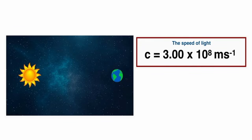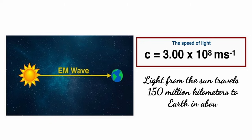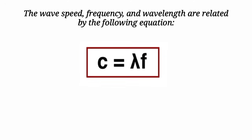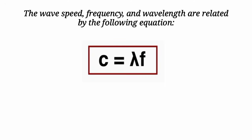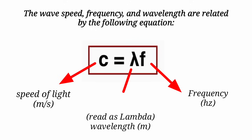To appreciate just how great this speed is, light from the sun travels 150 million kilometers to Earth in about 8 minutes. The wave speed, frequency, and wavelength are related by the following equation: C is equal to the product of wavelength and frequency, where C is the speed of light expressed in meters per second, the frequency F is expressed in Hertz, and the wavelength lambda is expressed in meters.